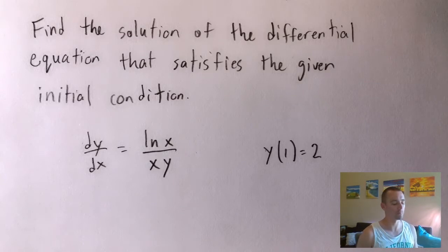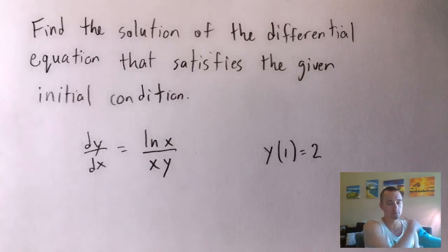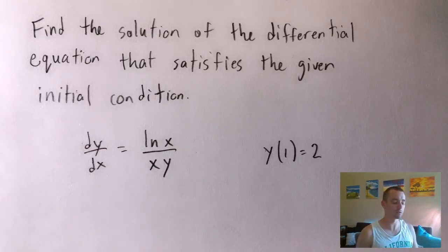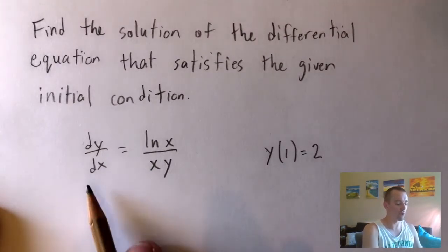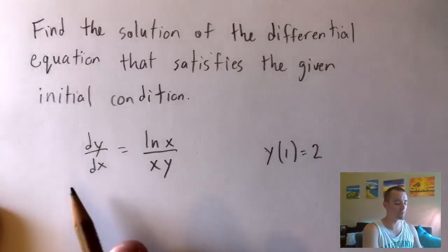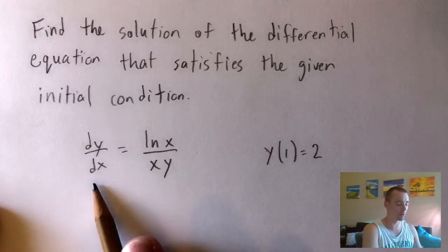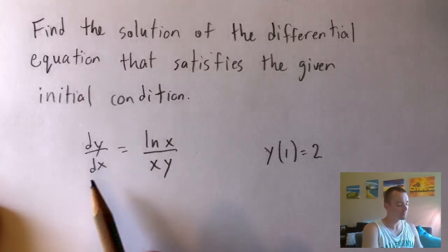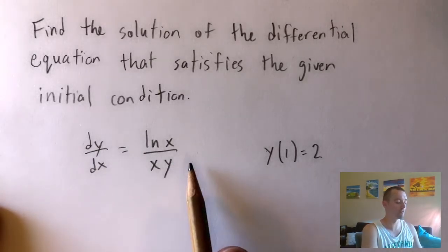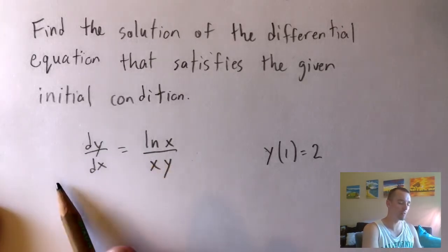Alright, let's jump into this problem. The first step in solving this kind of differential equation is to separate our variables — hence the name separable differential equation. Since we already have dy/dx on one side of our equation, that clues us in that we want to put our x's over to the right side and our y's over to the left side.